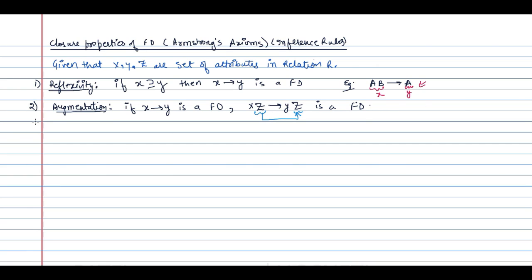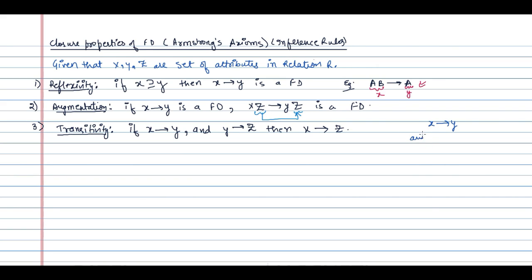The third property is called transitivity. If X determines Y and Y determines Z, then X determines Z also holds. This kind of property is called transitivity.